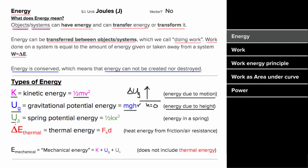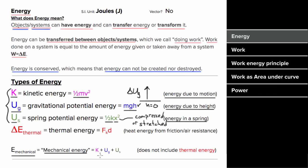There's also spring potential energy, which has to do with a compressed or stretched spring. The formula is one-half times the spring constant times x, where x is not the length of the spring — x is the amount the spring has been compressed or stretched. These three types — kinetic and potential energies — constitute what we call mechanical energy: the kinetic energy plus gravitational potential energy plus spring potential energy in a system. It's important to know that mechanical energy does not include thermal energy.